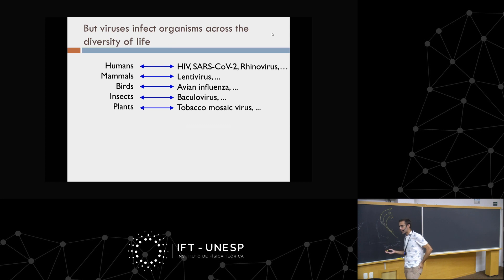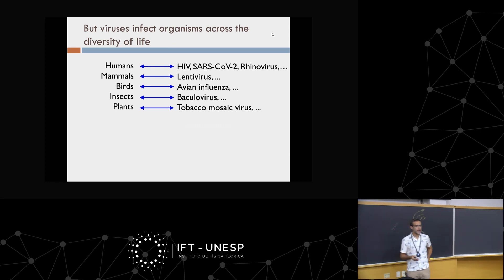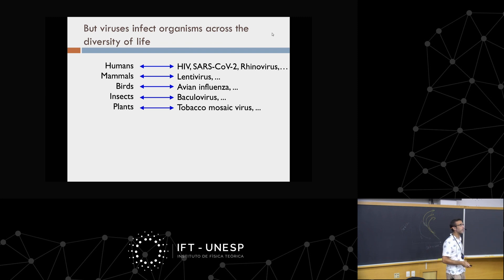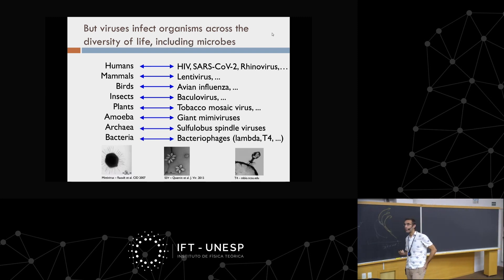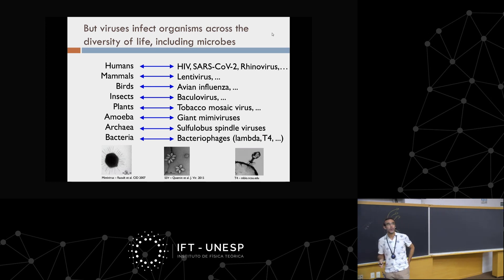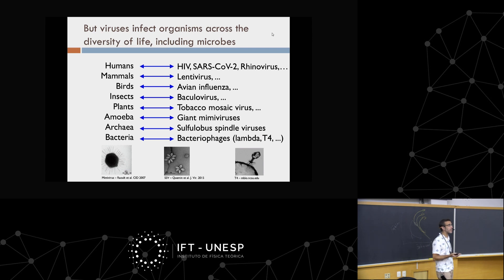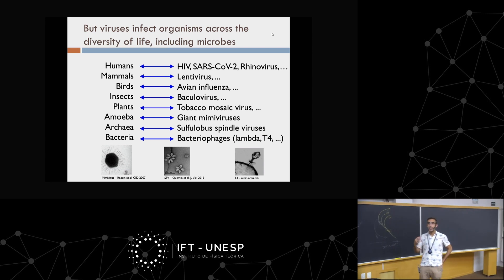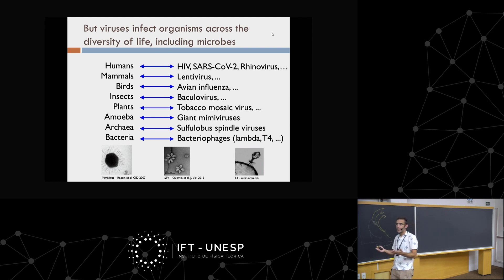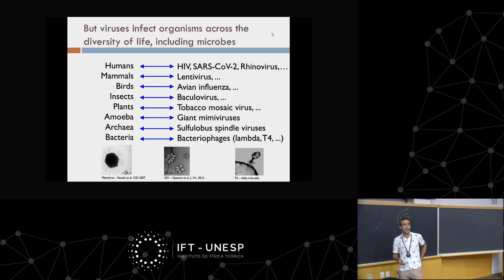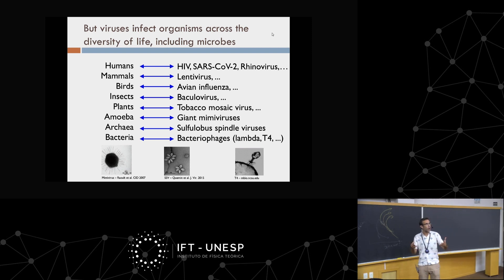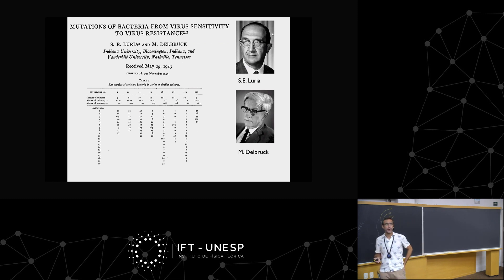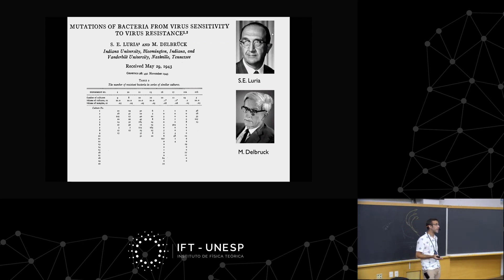Viruses don't just infect us — they infect organisms across the diversity of life: humans, mammals, birds, plants, insects, and also microbes. Microbes get sick too, and this has been known for over a hundred years. Viruses of bacteria were discovered indirectly through entities smaller than bacteria that nonetheless cleared bacteria on a petri dish; they were termed bacteriophage, from the Greek 'phagos,' meaning to devour — they were infecting and killing the bacteria.